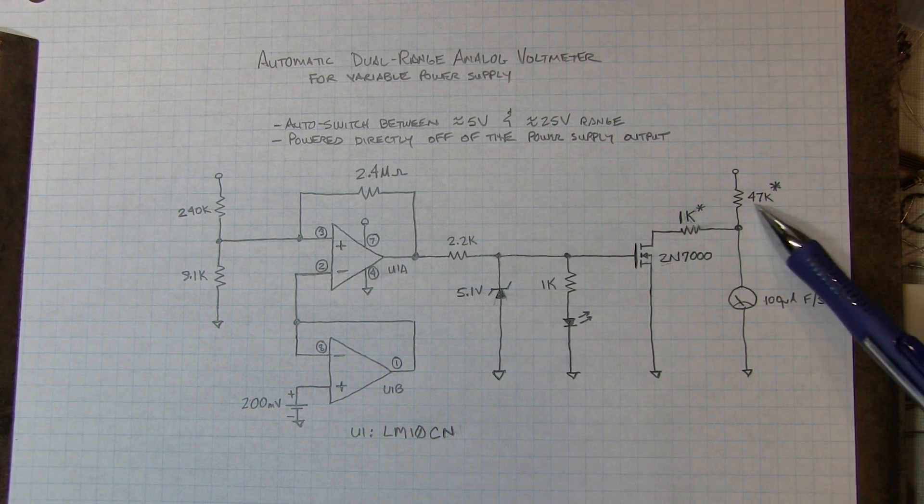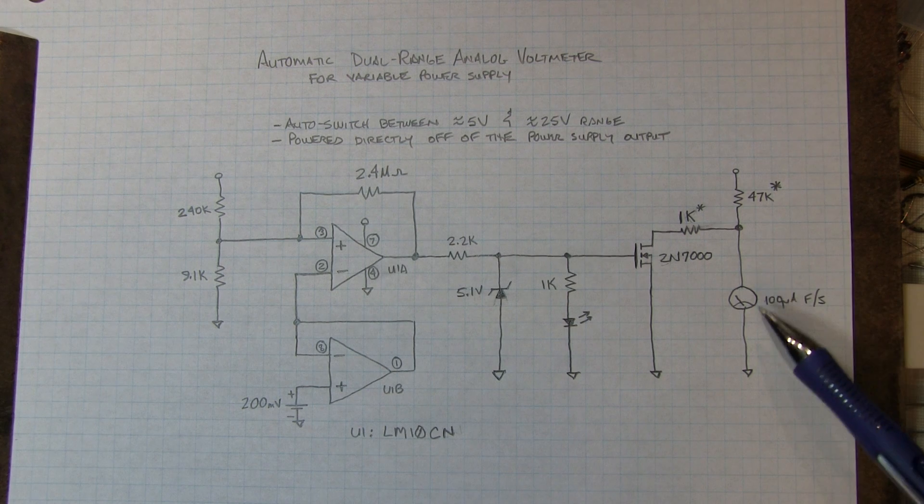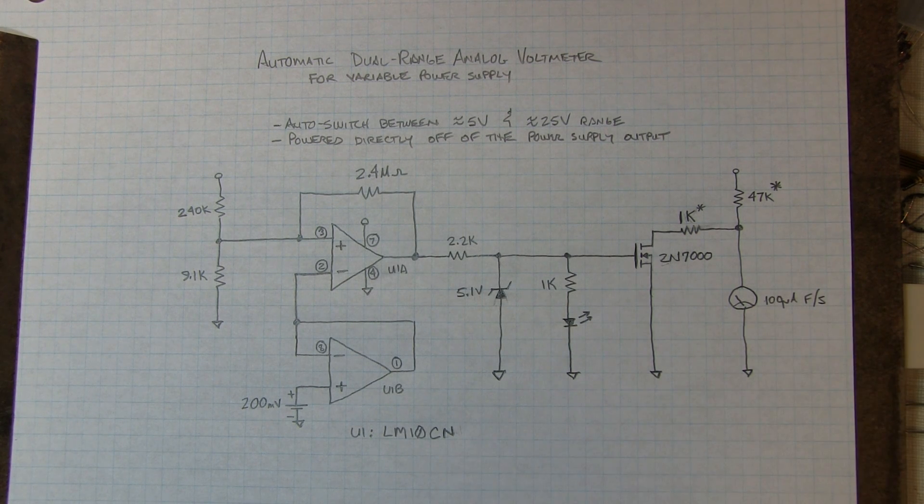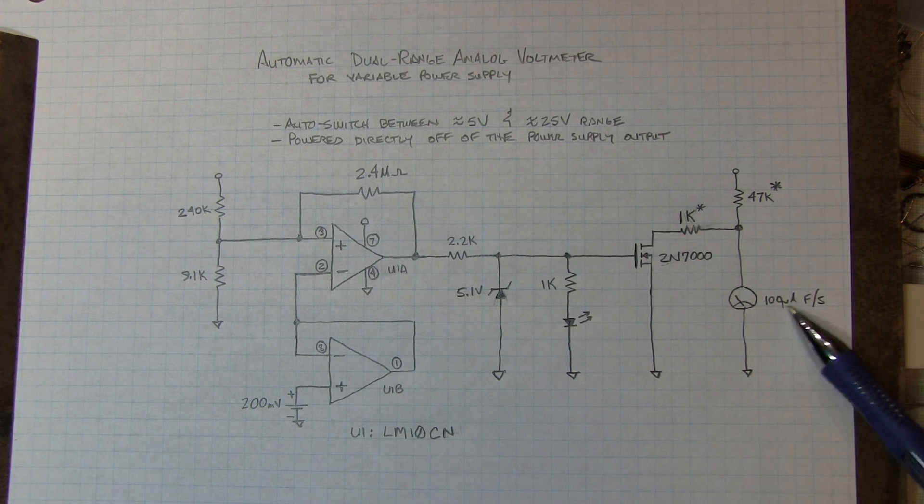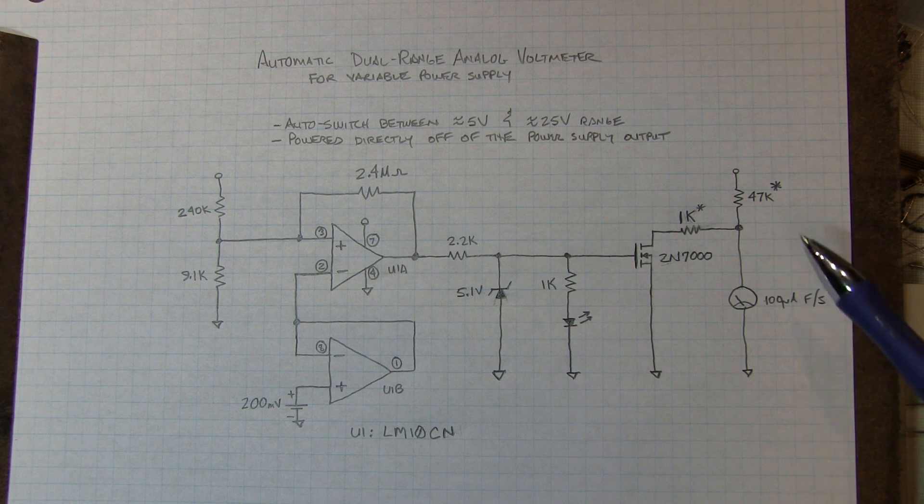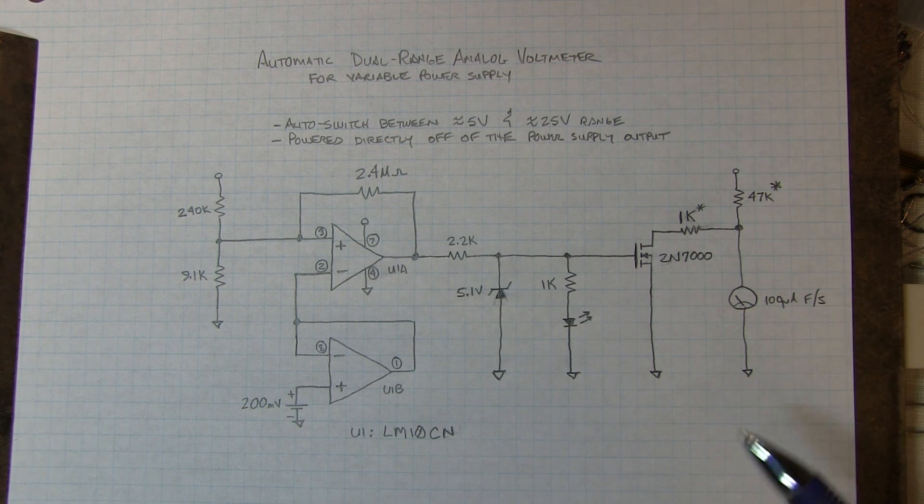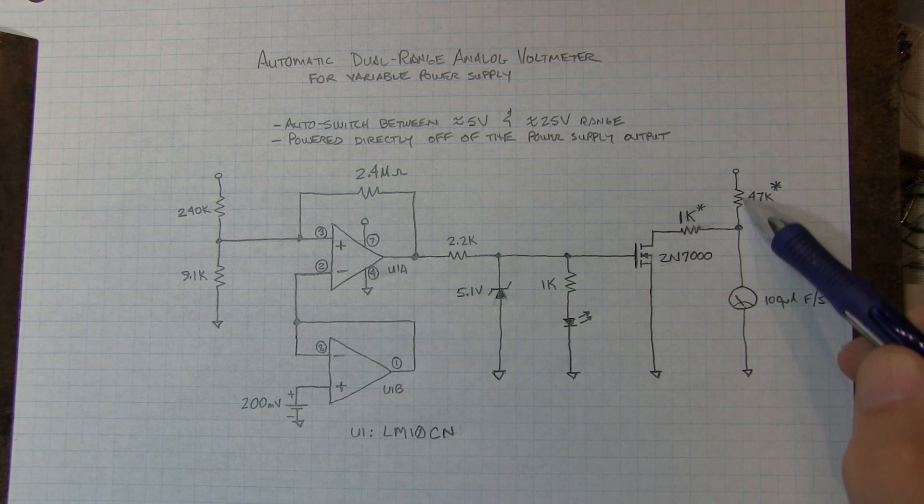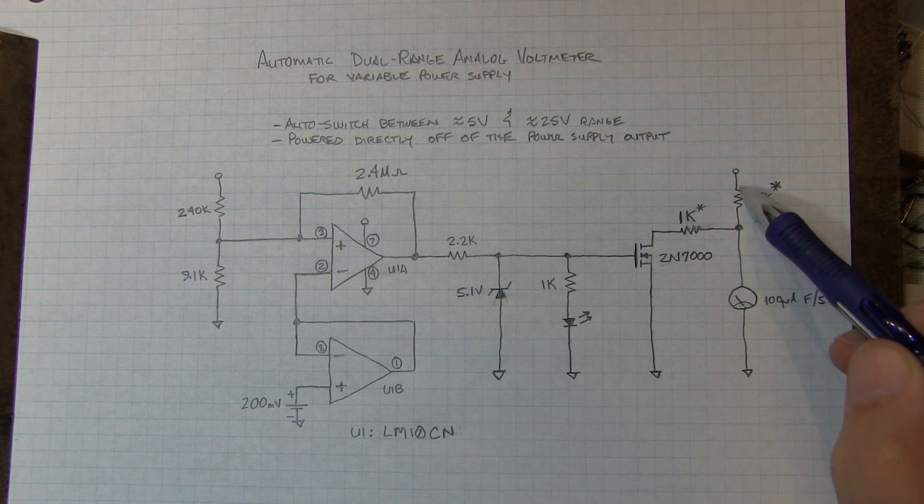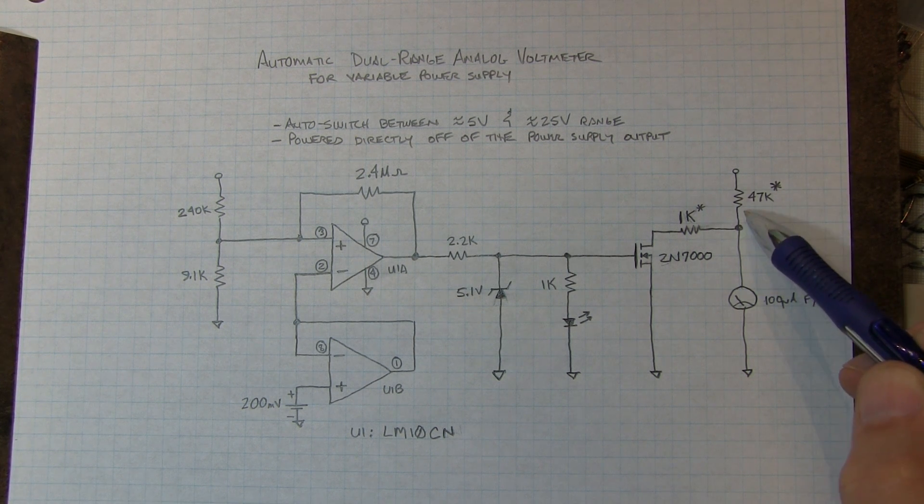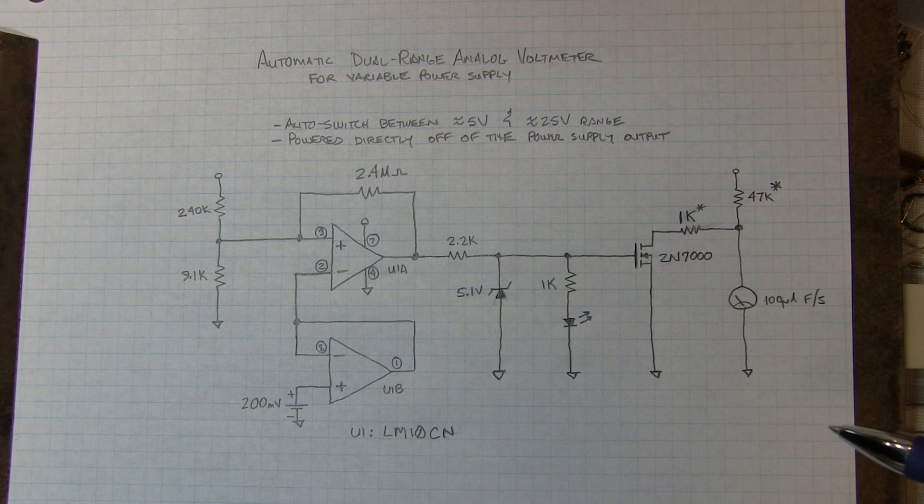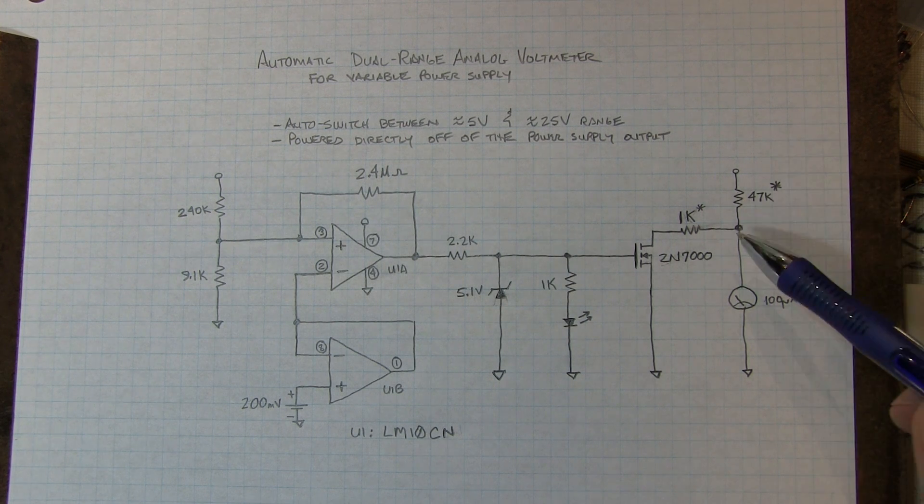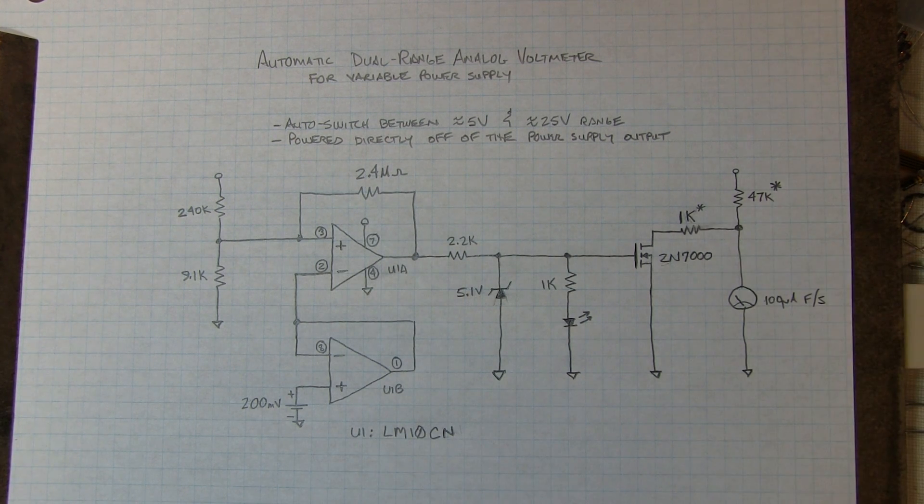Now, of course, you would have to select this value of resistor appropriate for the particular meter movement you have. In my case, this 100 microamp full scale meter I have, approximately 47K gives me what I want for the low range. It's not exactly right, but in your case, if you're going to build this and calibrate it, you'd probably split this resistor up into a fixed resistor and a trim pot to calibrate that meter to a specific voltage.